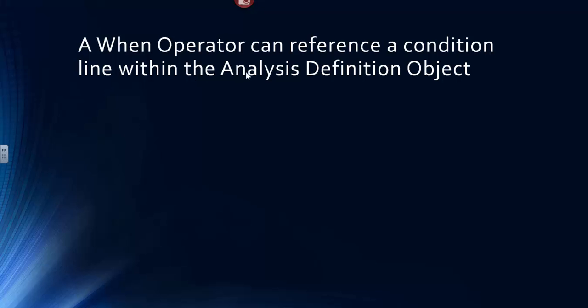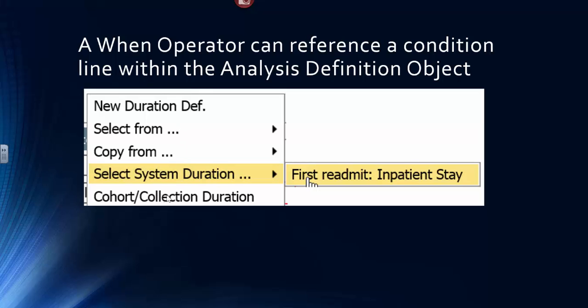A when operator can reference a condition line within the analysis definition object. This is a drop-down that would do it. It says, I want to select a system duration from my analysis definition canvas. It's already on the canvas. It's from another condition line.